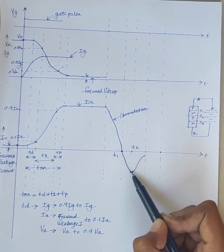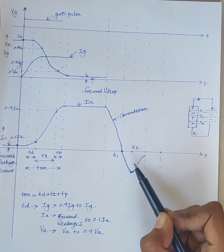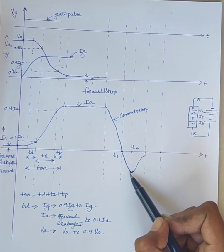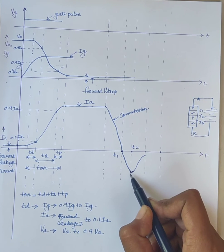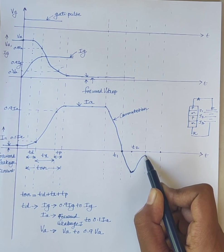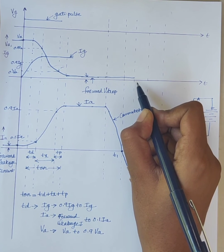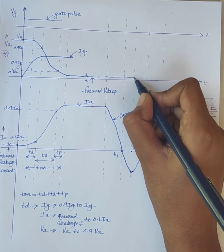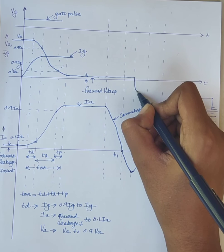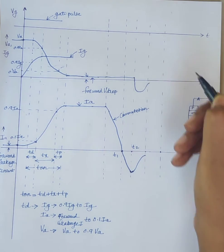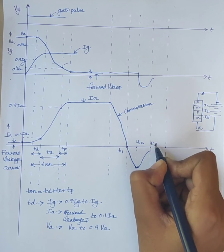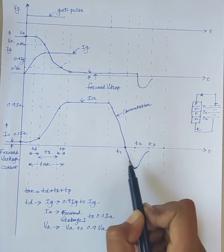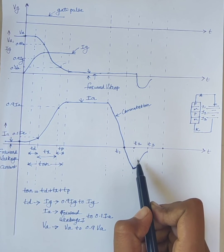The value of current at T2 is called reverse recovery current. This magnitude is called reverse recovery current. Due to the rapid decreasing of anode current, a reverse spike of voltage may appear across the SCR. Like this. A reverse voltage appears across the SCR. This one is T3. The total recovery time, that is T1 to T3, is called reverse recovery time.